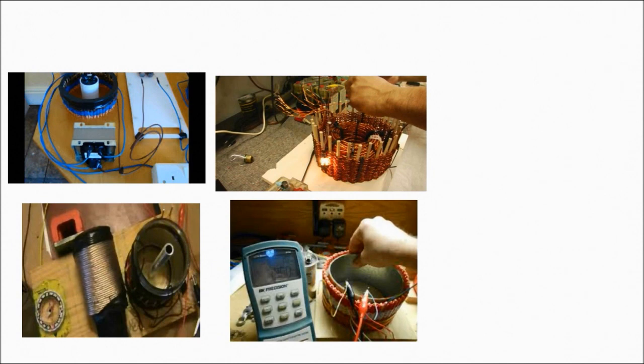Starting at the base, L2, the 64 turns of number 24 gauge copper enamel, all form the wire close wound.